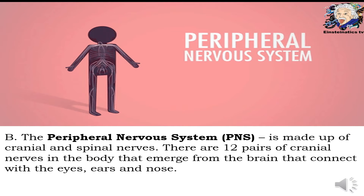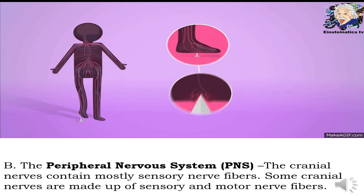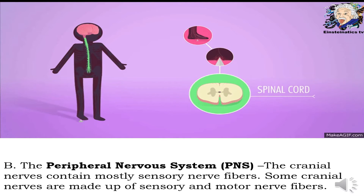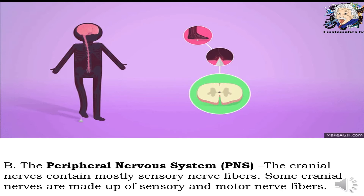Now let us proceed to the next major division of the nervous system, the peripheral nervous system or PNS. The PNS is made up of 12 pairs of cranial nerves that emerge from the brain and connect with the eyes, ears, and nose. It comprises the cranial and spinal nerves. The peripheral nervous system contains cranial nerves which have mostly sensory nerve fibers, some of which are made up of both sensory and motor nerve fibers.